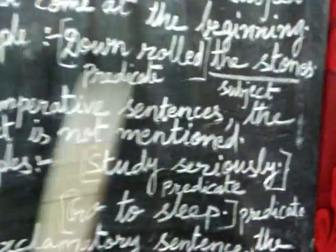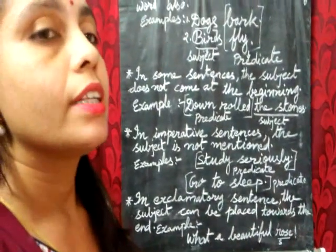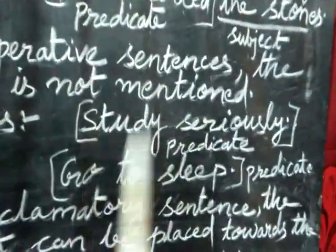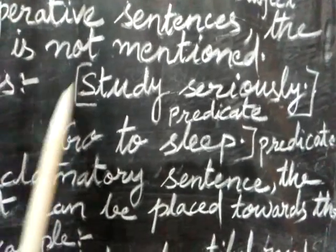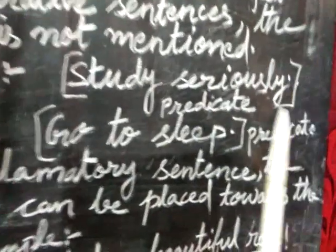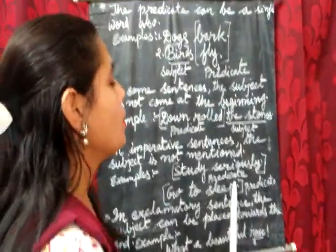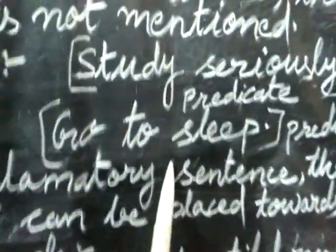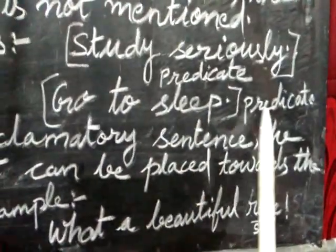In imperative sentences, the subject is not mentioned. In sentences where a command is given, like 'Study seriously,' the subject is not mentioned. The subject 'you' is there but it is not stated. So you will write that there is no subject mentioned, and 'study seriously' is the predicate. Similarly, 'Go to sleep' — the subject is 'you' but it is not mentioned, so 'go to sleep' is the predicate.